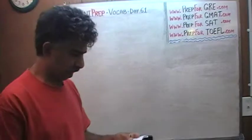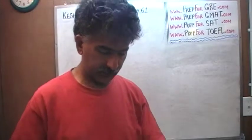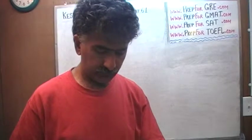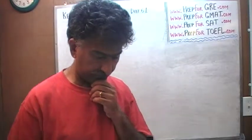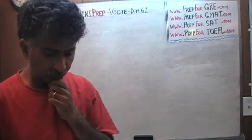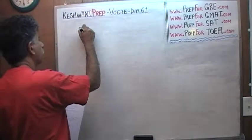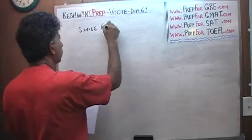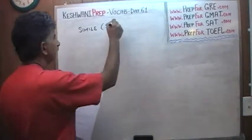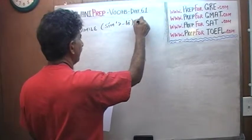Let's start with the first word. This first word may be very simple and straightforward for a lot of native speakers, but I am covering it so I can connect it to the other three words coming up, because they are all related. The word is 'simile' — sim-i-ly. It's a noun.